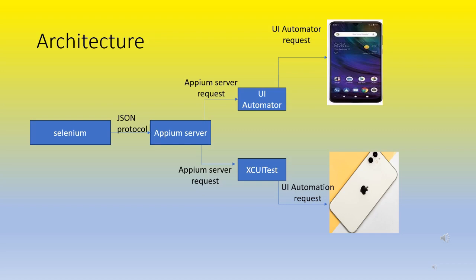The APM server receives a request and sends a corresponding request. There is a request for the APM server including the desired capabilities. I can set the desired capabilities — these are the required features in Android or iOS. Then there is an Android phone — a real device or an emulator. You can send the request from the real device, and then the bootstrap.jar file handles the request.